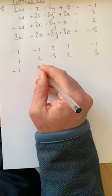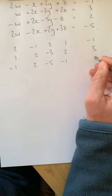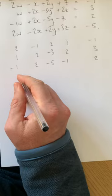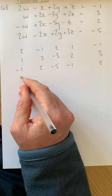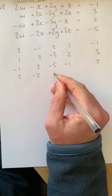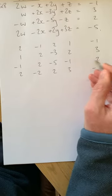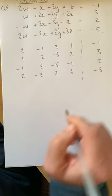Then -1, 2, -5, -1, and 2. And then the last one would be 2, -2, 2, 3, -5.